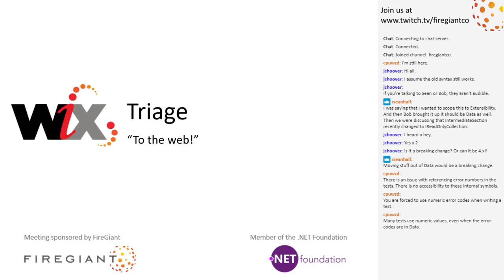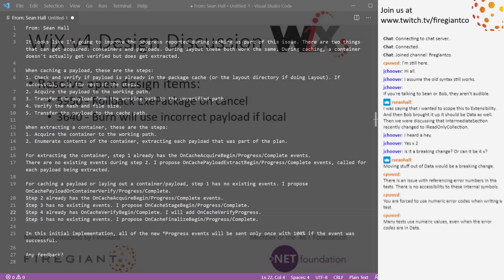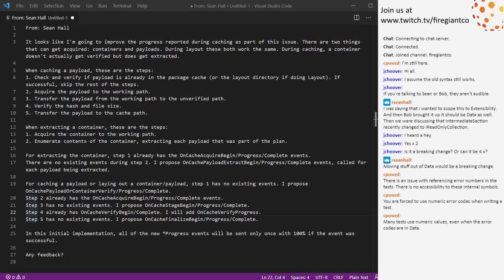Let's go back to our design discussions — I picked two, both Sean's, because I don't remember resolving them. Sean, do we need to talk about rollback XC package on cancel? He's not working on that right now, so let's talk about the lower number first. The lower one is burn when you use incorrect payload if local — this has been a long-standing thing. Burn just has a bad design decision here. Sean sent an email to Wix devs about it. Let me let Sean summarize it.